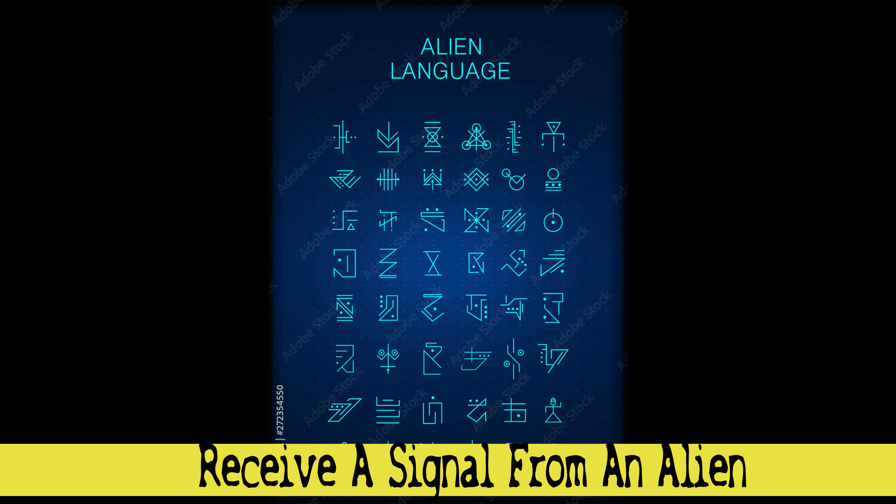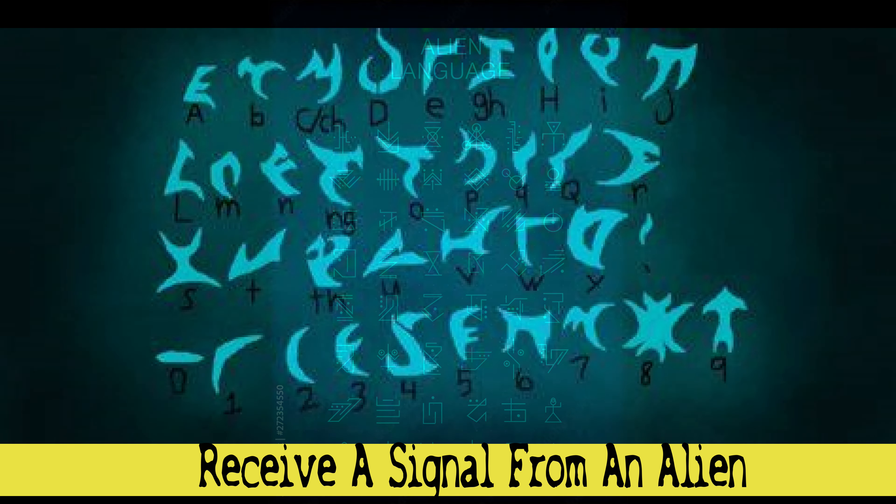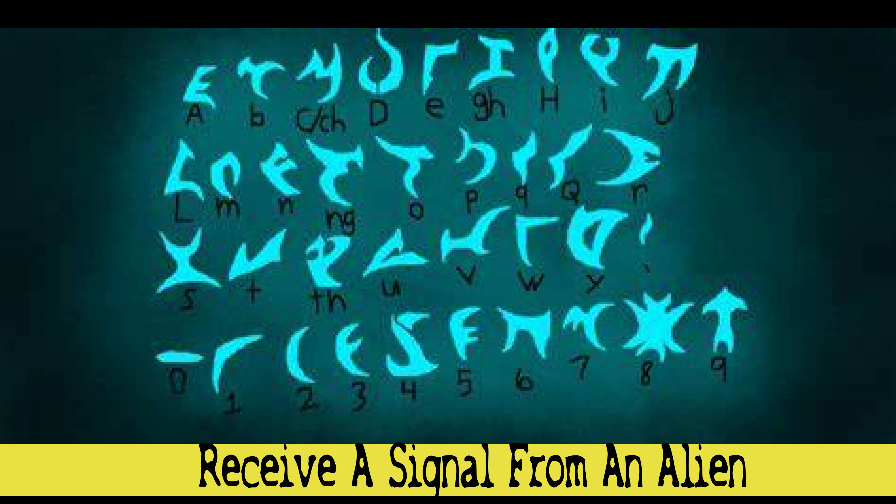We have recursive rules that allow us to generate infinite sentences from a finite set of elements. Extraterrestrial languages might have finite rules that limit the number of possible sentences.